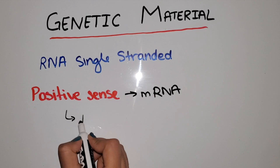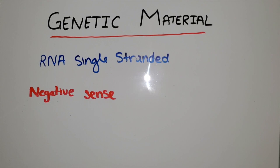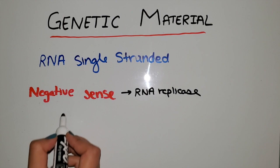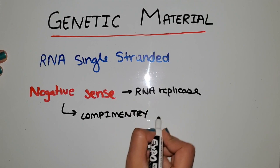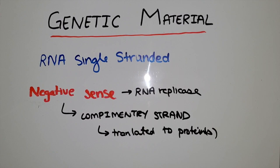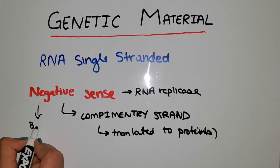Negative sense is a little more complicated. Unlike positive sense, which acts like mRNA and is translated directly, negative sense actually needs an RNA replicase. This is important because RNA replicase allows for the synthesis of a complementary strand, which is then translated to a protein. The way I remember the difference: negative reminds me of bad, so I know it's more work than positive. Positive sense — think good — just gets translated directly.